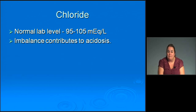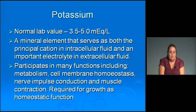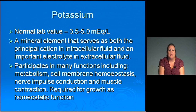Chloride normal lab level is 95 to 105, and imbalances contribute to acidosis, which is why we discuss it with blood gases. Potassium normal lab value is 3.5 to 5. It serves as the principal cation in intracellular fluid and an important electrolyte in extracellular fluid, participating in metabolism, cell membrane homeostasis, nerve impulse conduction, and muscle contraction. It is required for growth, so low potassium levels may cause poor growth.